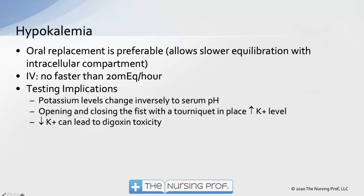A testing implication: potassium levels change inversely with serum pH. If blood is sitting for a long period and becomes acidotic, that could artificially change the potassium level.